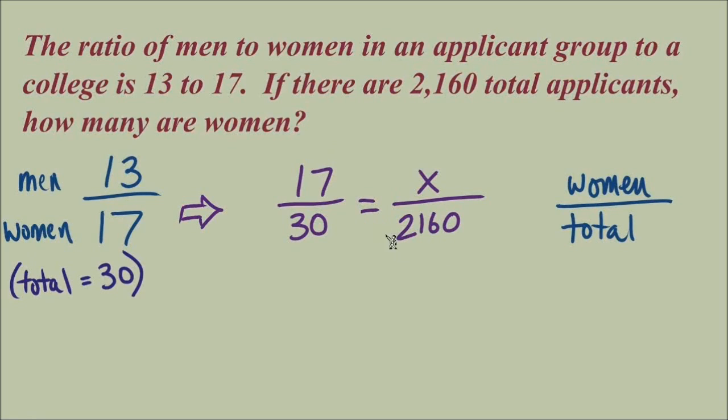Let's solve this proportion. Multiplying diagonally one way, we get 30x. Multiplying diagonally the other way, 17 times 2,160 equals 36,720. Finish solving for x, we're dividing both sides by 30, gives us x equals 1,224.